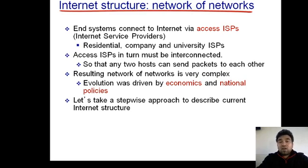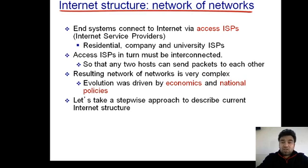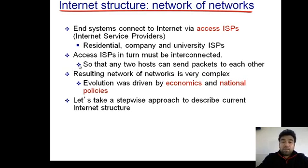This slide says that end systems connect to the internet via access internet service providers. We have three types of access: residential access, company access, and university access — which we have already discussed in previous lectures. These are the access ISPs through which we get connected with the internet. The question is: are these access ISPs connected with each other? Access ISPs must be interconnected so that any two hosts can send packets to each other. The resulting network of networks is very complex.